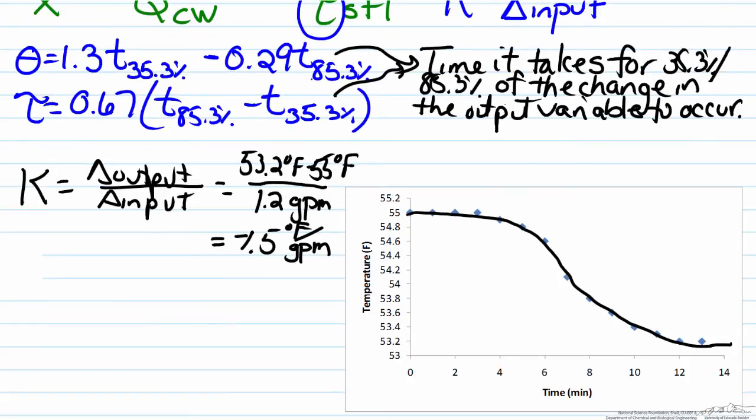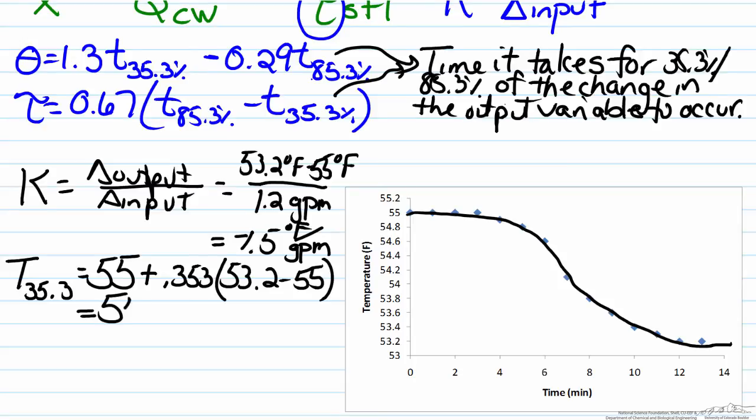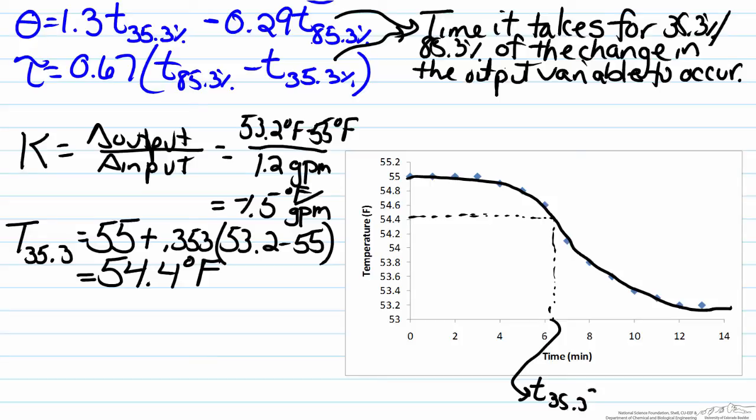Now we want to determine the time it takes to reach 35.3% and 85.3% of the change. But in order to do that, we need to find what those temperatures are. So the temperature that corresponds to 35.3 is going to be our starting value, 55, plus 35.3% or .353 of the way from 53.2 minus 55. When this is done, we end up with about 54.4 degrees Fahrenheit. So what we want to do here is determine the time. If we look at our 54.4 graph and we find the time that corresponds to it, we end up with that t 35.3 is approximately 6.3 minutes or so. Note for better accuracy we would have more lines on the graph, but for this analysis this will work okay.